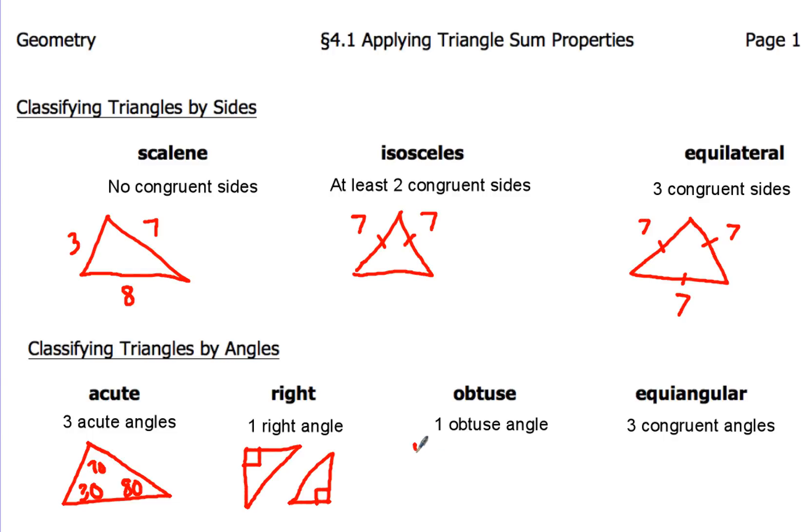An obtuse angle, for the obtuse angle, that's going to be one angle in there that's more than 90 degrees. So say we had an angle that was 105. Well, then that would be an obtuse triangle.